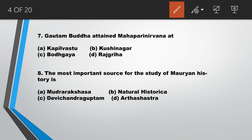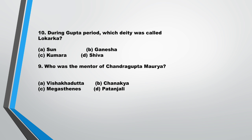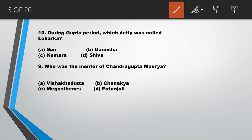Sixth question: the great lawgiver of ancient time was answer C, Manu. Question number seven: Gautam Buddha attained Mahaparinirvana at answer B, Kushinagar. Question number eight: the most important source for the study of Mauryan history is answer D, Arthashastra. Question number nine: who was the mentor of Chandragupta Maurya? Answer is A, Vishaakhadutta. Question number ten: during the Gupta period, which official was called Lokpal? Answer is A, Aayukta.